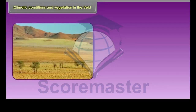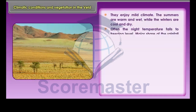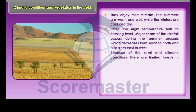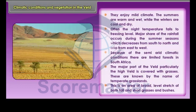The Veld enjoys a mild climate. The summers are warm and wet, while the winters are cool and dry. Often the night temperature falls to freezing level. The major share of rainfall occurs during the summer seasons, decreasing from south to north and also from east to west. Because of the semi-arid climatic conditions, there are limited forests in South Africa. The major part of the Veld, particularly the high Veld, is covered with grasses, with broad level stretches of both tall and short grasses and bushes.